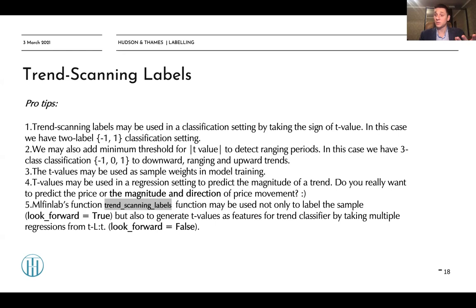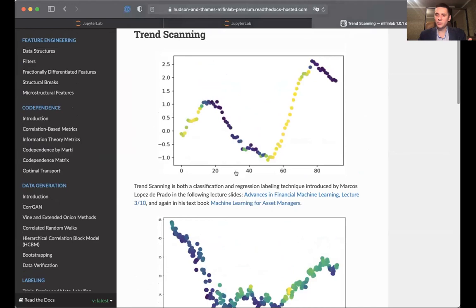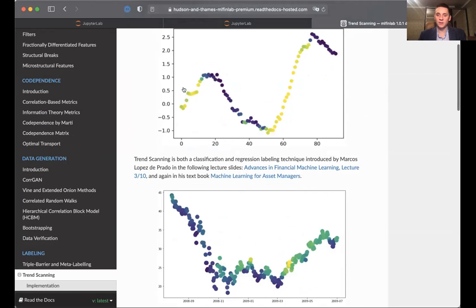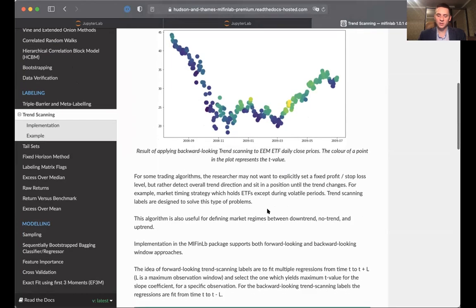Now let's take a look at ML FinLab's function signature and ML FinLab documentation. We can still see the picture from the presentation, and as we can see, we can either use it in a look-forward setting to label the current value, but we can also use it in a backward-looking setting to use t-values as features.